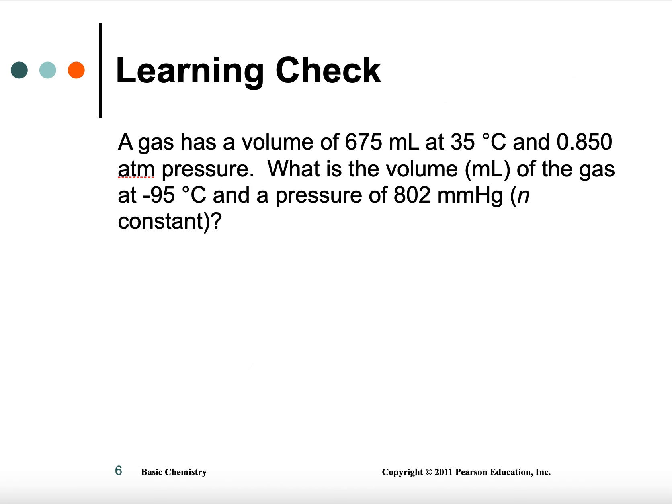So what do we have? We've got a volume, a temperature, and a pressure. So this is combined gas law. They're asking for the volume, and they're going to give you the other two. They're going to give you a new temperature and a new pressure. Now, always check to make sure they're in the same units. This one's 0.85 atmospheres. This one is 802 millimeters mercury. They're doing that just because they're nasty people. You're going to have to get them to one or the other.